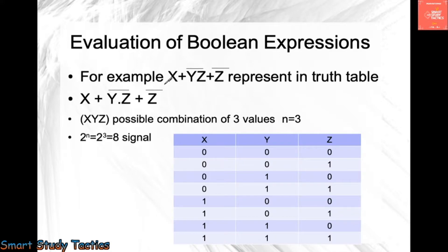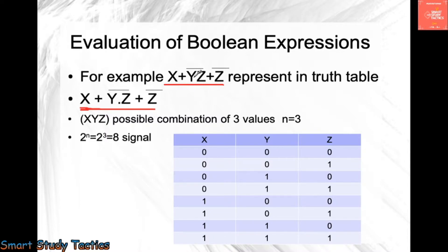For example, if we want to represent this in a truth table, how will we do this? I converted the statement into this form: x + yz whole bar + z bar. This is the bar on both things, and this is the bar on separate z. Here you can see y·z — the dot operator. I have not put it explicitly because you are going to get questions like this and you have to understand that the dot operator is implied.